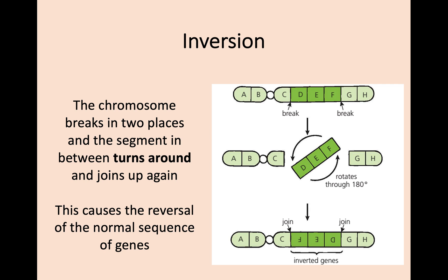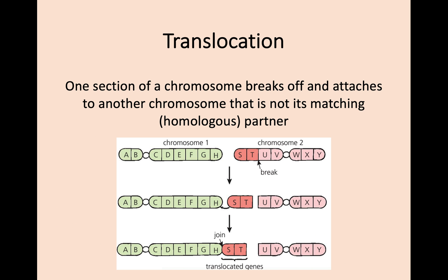Inversion is a strange one — similar to deletion, we have a break at the start of D and end of F, but instead of disappearing it's turned round. So now you have CFED, which has been inverted. It reverses that normal sequence of genes but doesn't affect the number of genes. In translocation, one section of chromosome breaks off and attaches to another chromosome but not its homologous partner. Part of chromosome 2 has translocated to chromosome 1 and joined on, giving chromosome 1 additional genetic information that shouldn't be there, while chromosome 2 is now shorter.